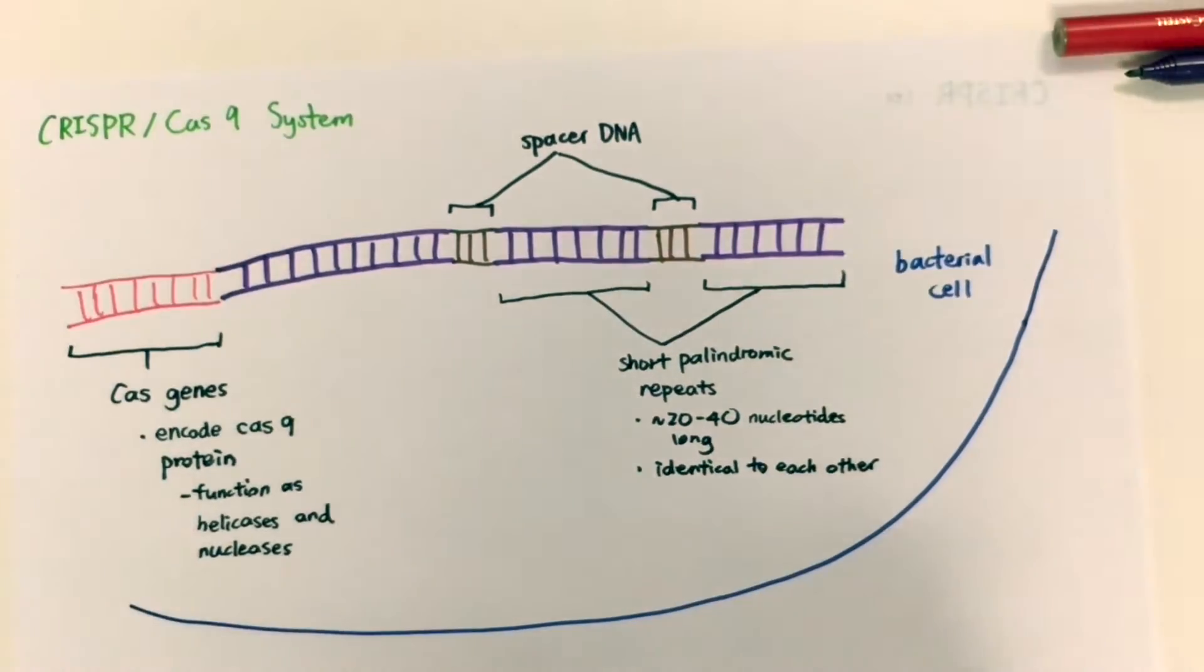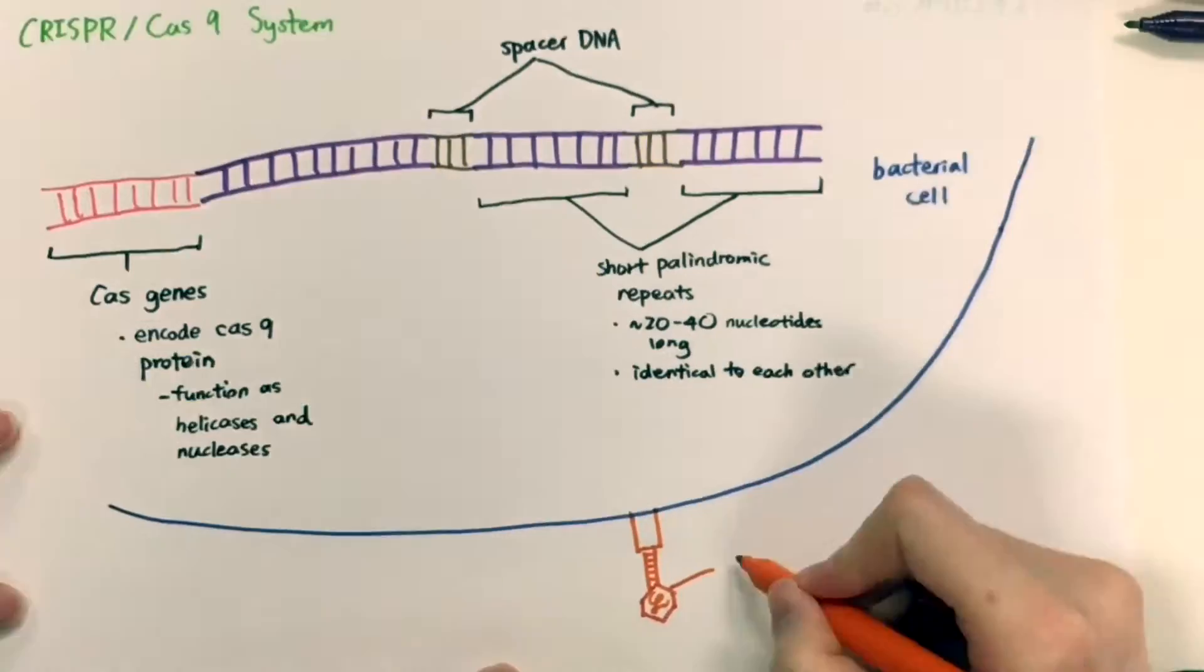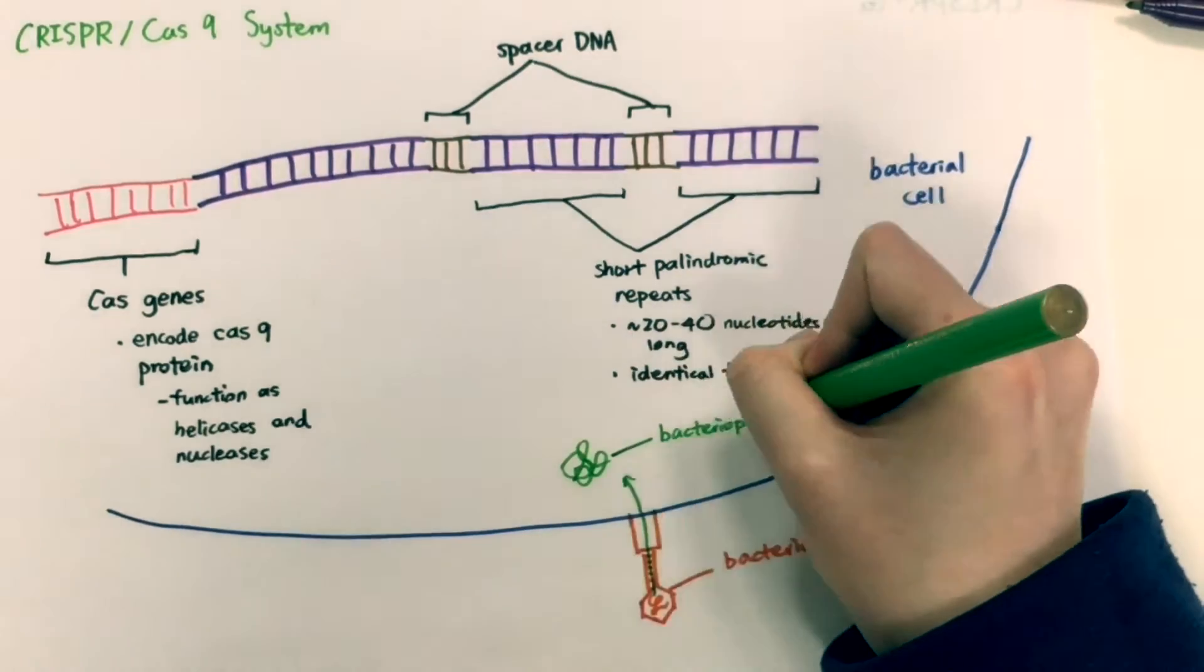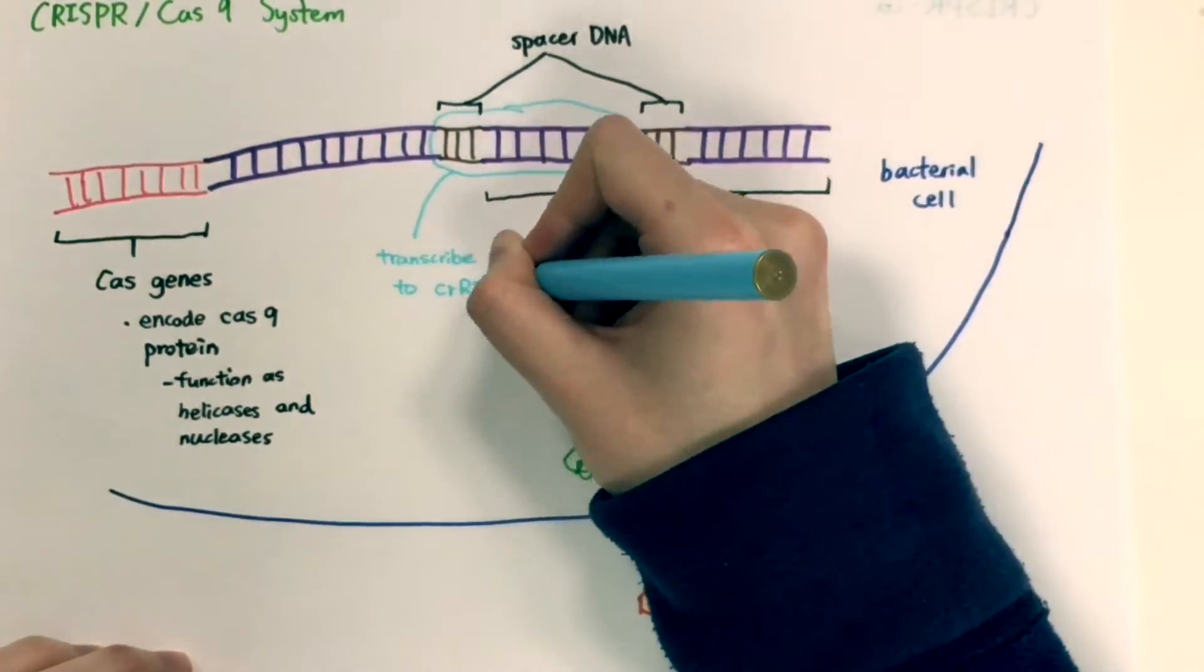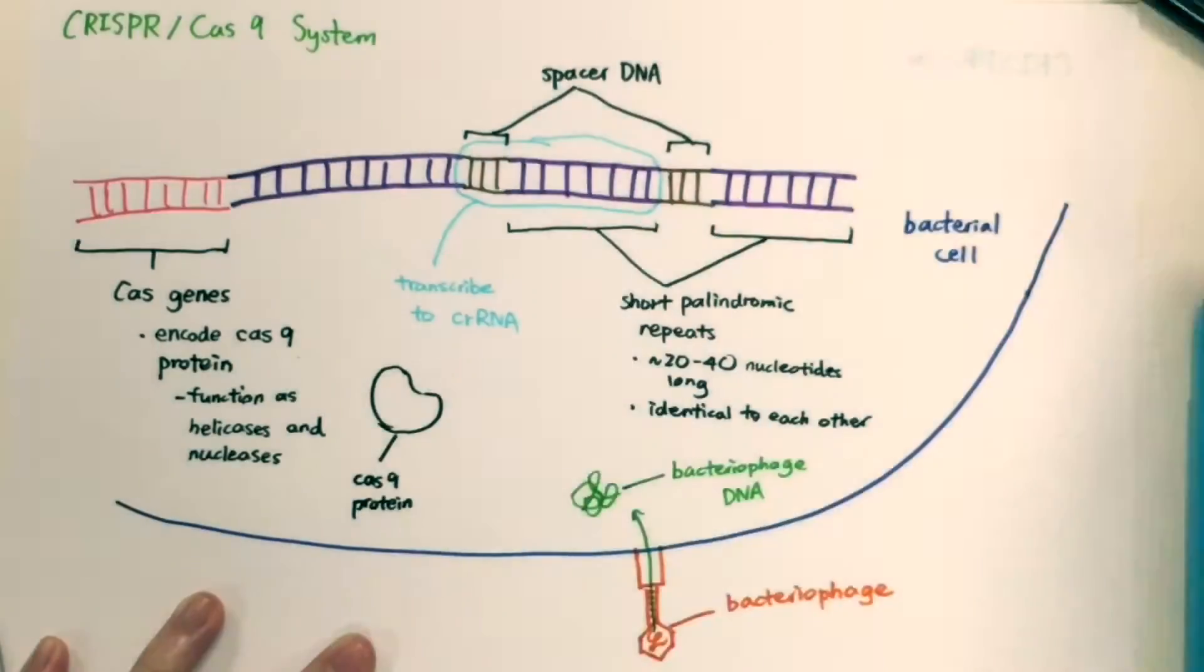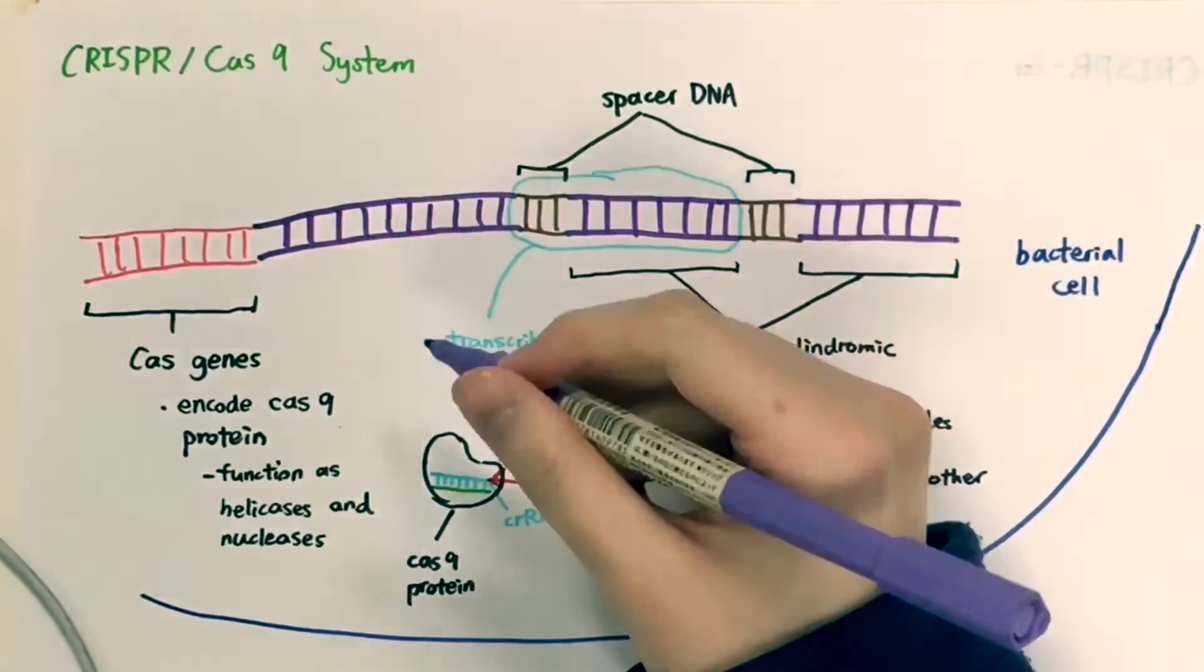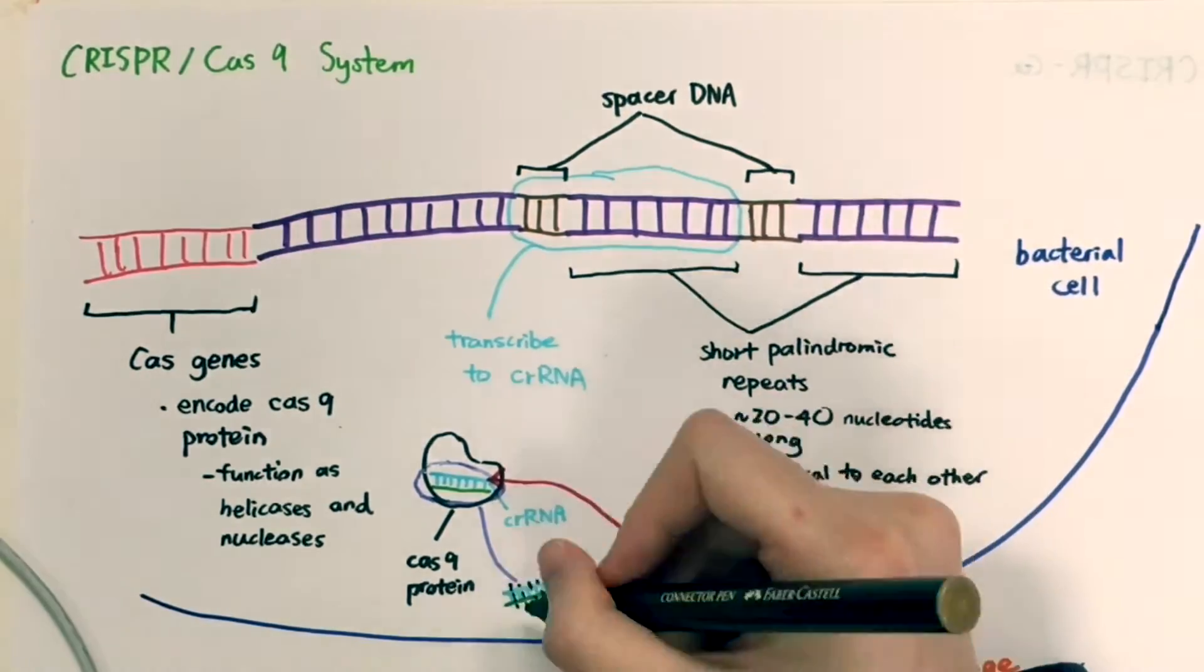This system is the immune system of bacteria, as it happens when bacteriophage DNA is injected into the bacterial cell. DNA is also being transcribed to make CRISPR-RNA. CRISPR-RNA will fit into Cas9 protein, which in turn cleaves the bacteriophage DNA to prevent infection of bacterial cells.